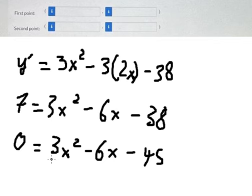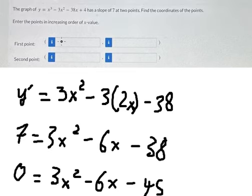If we use the calculator, we got x equals negative 3 and x equals 5. So we put -3 here and 5 here.